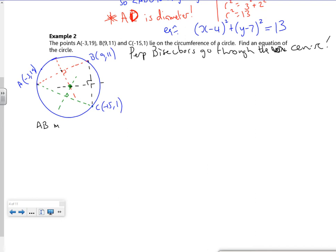So AB midpoint will be average of x's. That's minus 3 plus 9 over 2 is 3. 19 plus 11 is 30 over 2 is 15. The gradient of AB. So change in y over change in x. So 11 minus 19, 9 minus minus 3. That's going to give me minus 2 thirds.